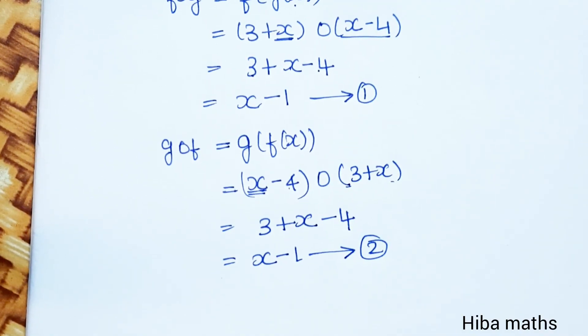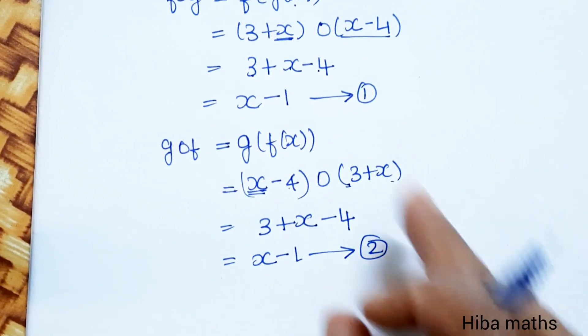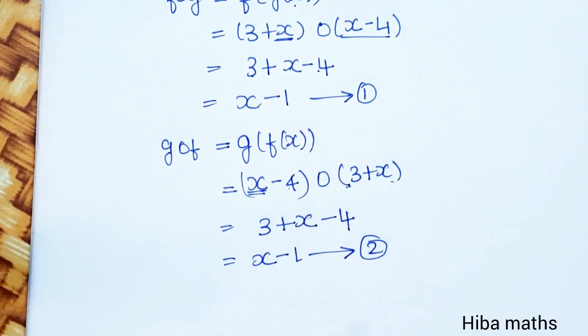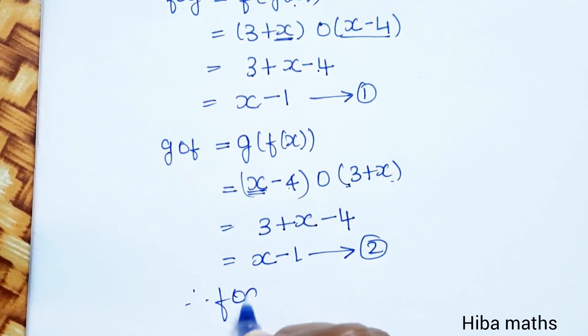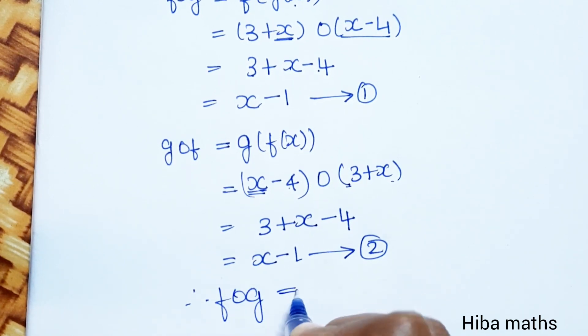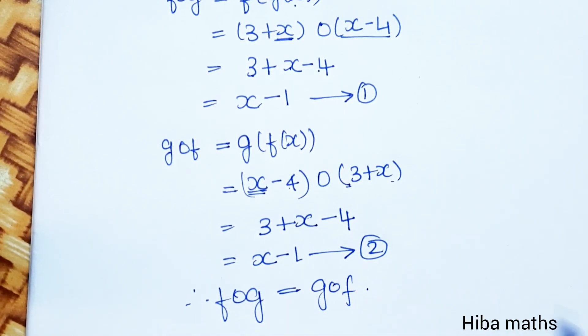f of g equals x minus 1, and g of f also equals x minus 1. Therefore f of g is equal to g of f.